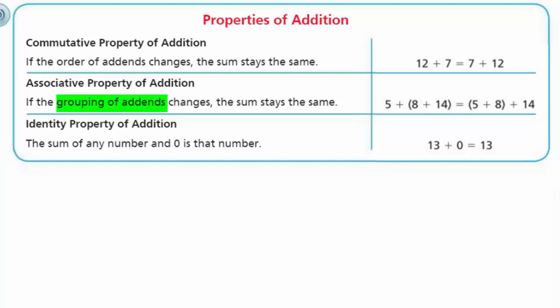It states if the grouping of addends changes, the sum stays the same. The grouping is the key word, grouping. And usually when we see the grouping, you'll see like in our example, we have 5 plus, and then we have the sum of 8 and 14. That's how we state that in parentheses. So the sum of 8 and 14 plus 5.